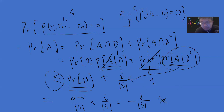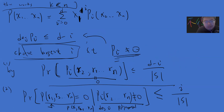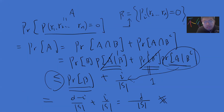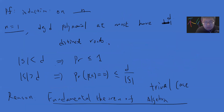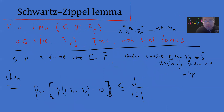This proof is very beautiful. The first time I saw this theorem I guessed you'd use mathematical induction, but the elegant part is that you get two terms — one containing (d − i)/|S| and one containing i/|S| — and bounding each remaining factor by 1 lets them combine to give d/|S|. I hope you guys liked this video on the Schwartz-Zippel lemma. See you next time!